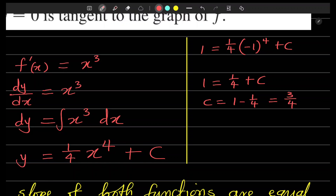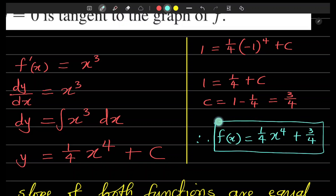So the function we're looking for is one fourth x to the fourth plus three fourths. Therefore, f of x equals one fourth x to the fourth plus three fourths — and that is the answer to this word problem. Never stop learning; those who stop learning have stopped living. Bye-bye!